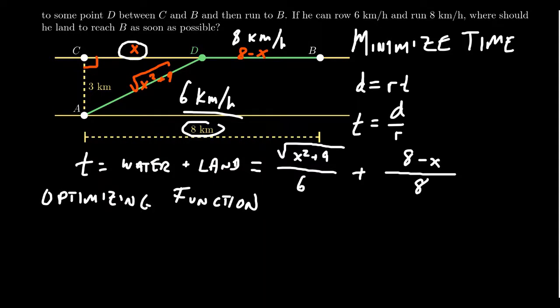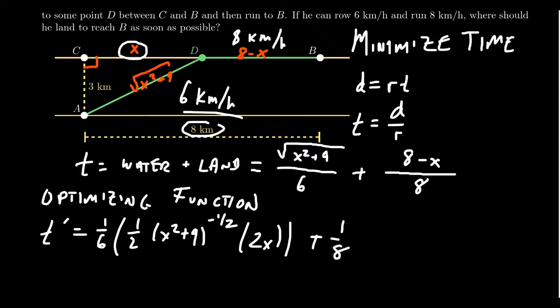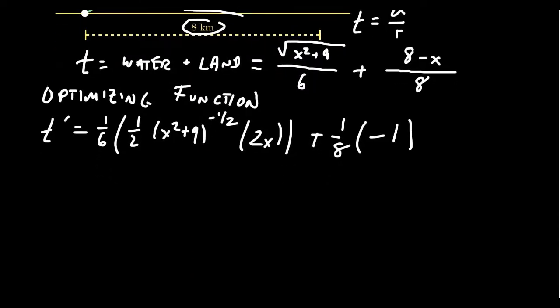If we take the derivative of time with respect to our choice x, we're going to get 1/6 times, take the derivative using the chain rule. We're going to get 1/2 times x squared plus 9 to the negative 1/2 power times 2x, the inner derivative. And then over here, we're going to get 1/8 times the derivative, which would be negative 1. Simplifying, this 1/2 cancels with the 2 right here.